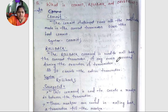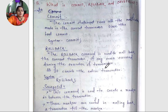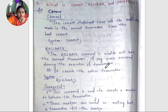The ROLLBACK command is used to roll back the current transaction. If any error occurs during the execution of a transaction, we can use rollback to cancel it — it cancels the entire transaction.